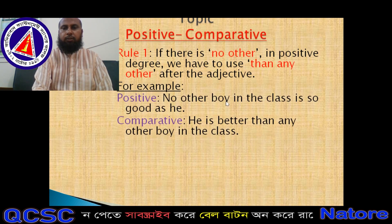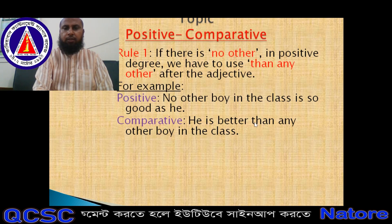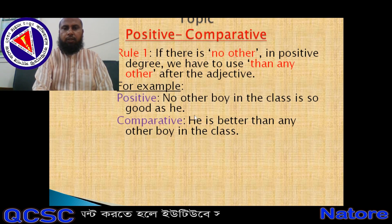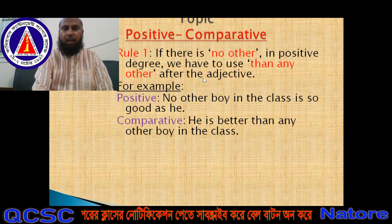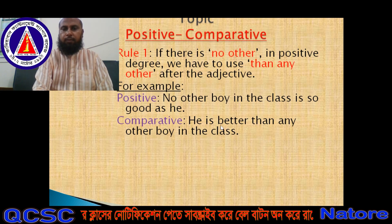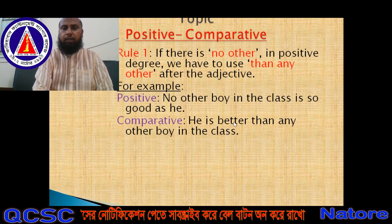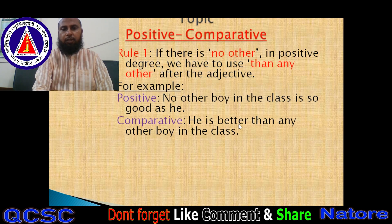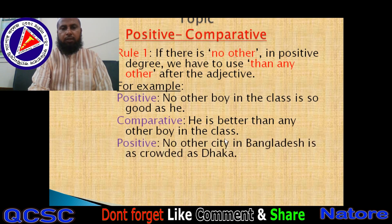So there is an example: 'No other boy in the class is so good as he.' The answer should be: 'He is better than any other boy in the class.' You see, there was 'no other,' and that's why there is 'than any other.' And I said after the adjective — that's why 'than any other' comes after 'better.' Also, 'good' is the positive form and 'better' is the comparative form.